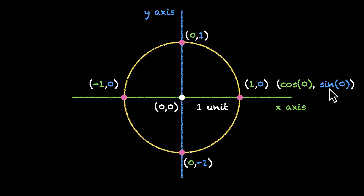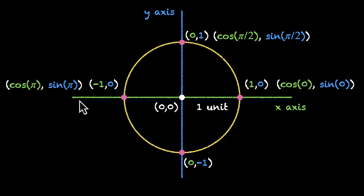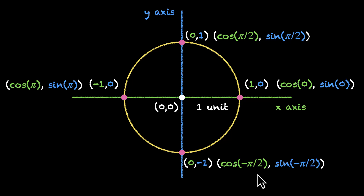Similarly, the point at pi by 2 (90 degrees) gives us cos of 90 is 0 and sine of 90 is 1. This one is pi: cos of pi is minus 1, sine of pi is 0. This one is 3 pi by 2, or we can also call this minus pi by 2 if we move in this direction — cos of 3 pi by 2 is 0, and sine of minus pi by 2 is minus 1. So we have four angles sorted.